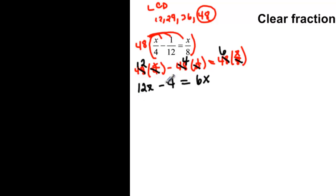Now I have x's on both sides but constants only on this side, so even though it's going to give me a negative x value, I'm going to subtract 12x from both sides. So this will give me 0, and then minus 4 equals 6x minus 12x, which would be negative 6x.